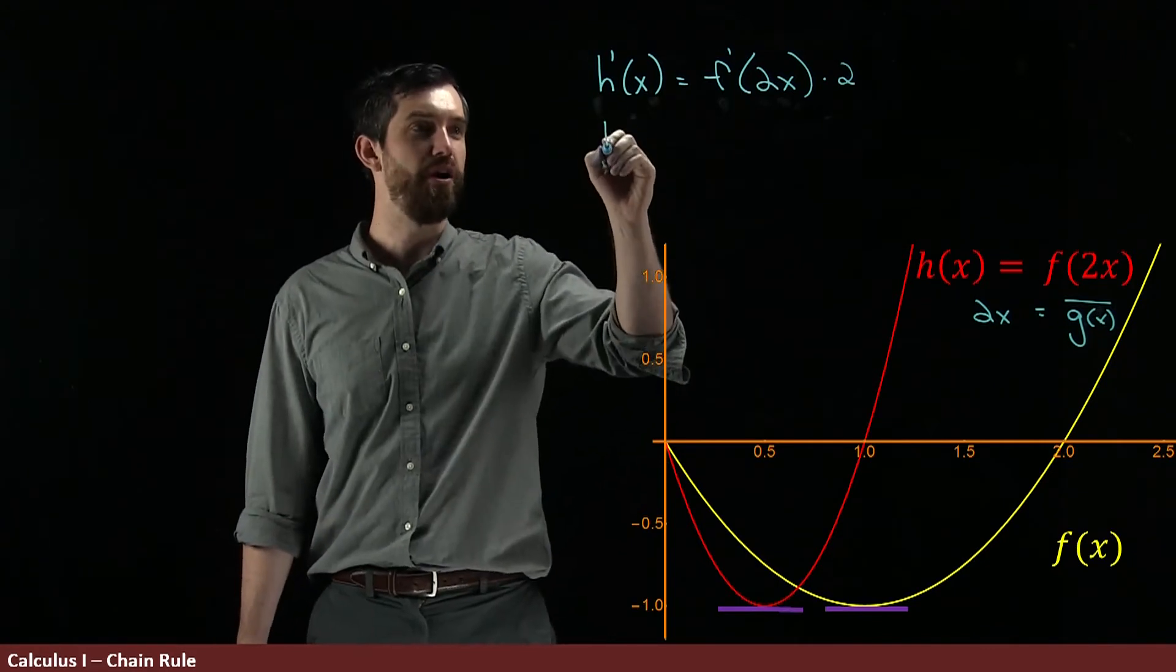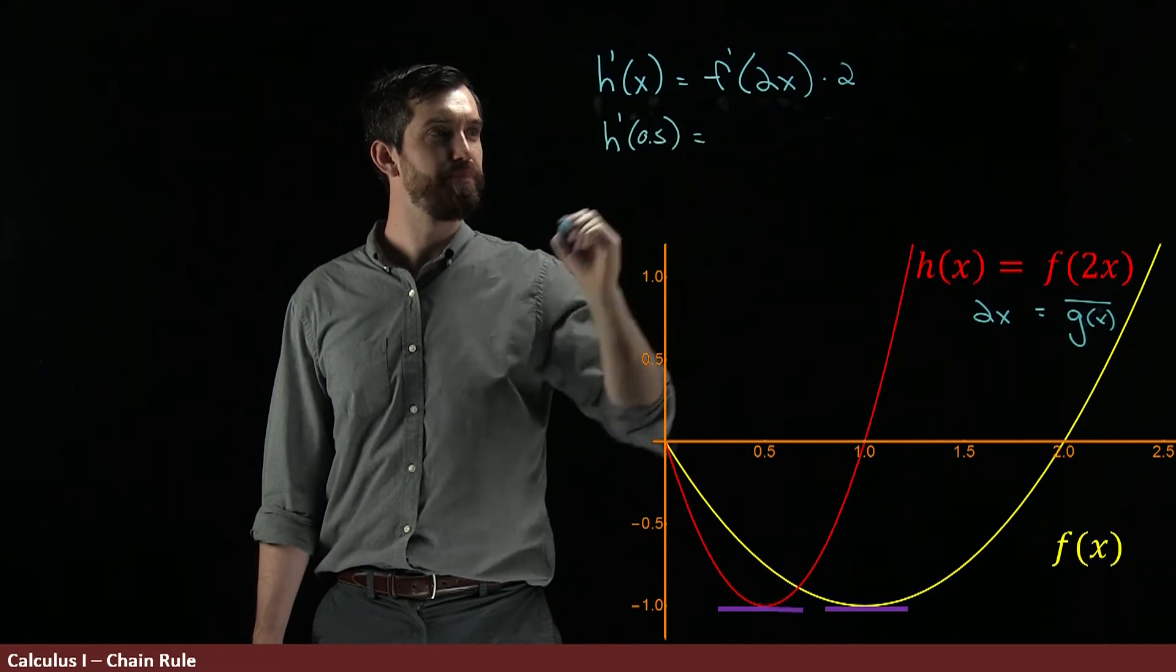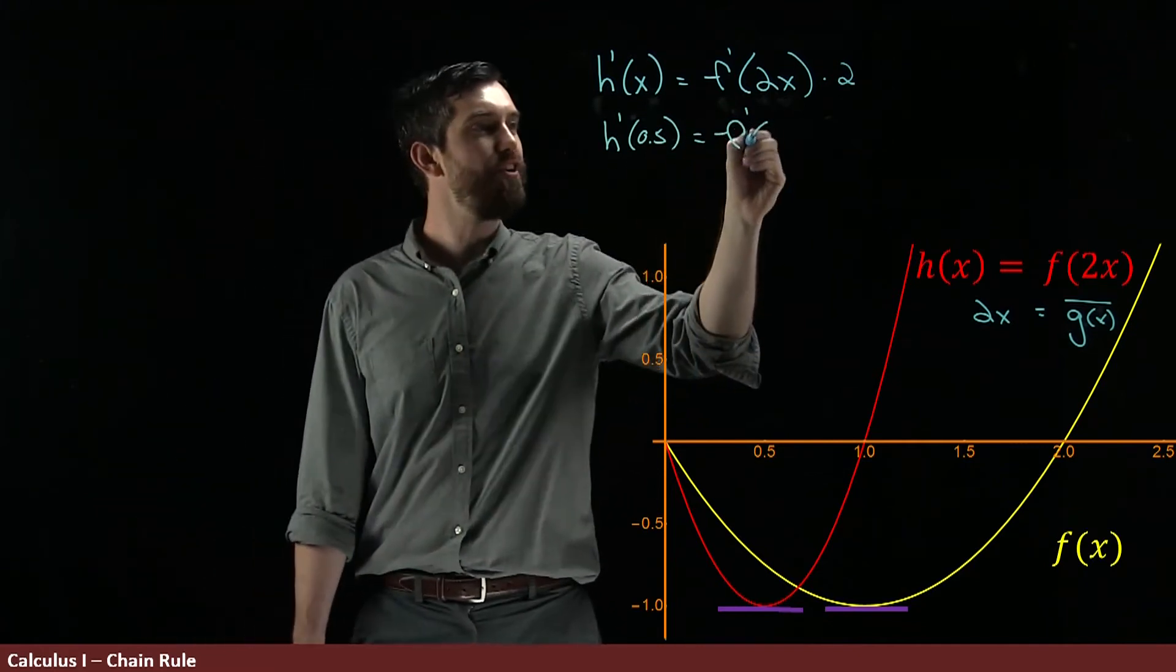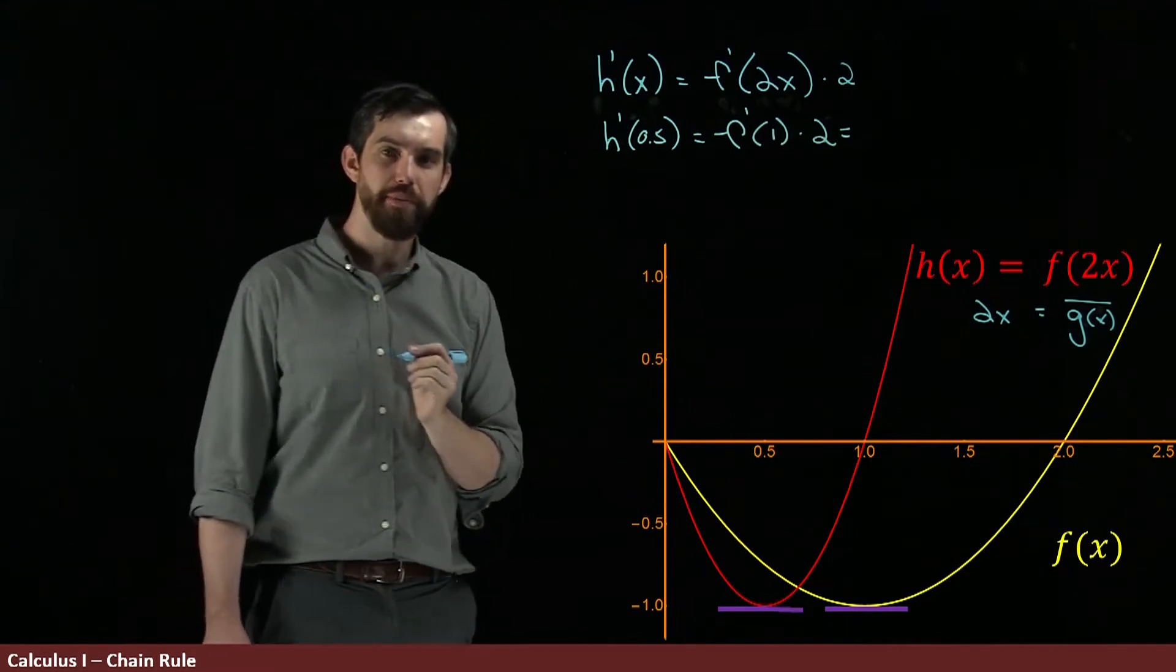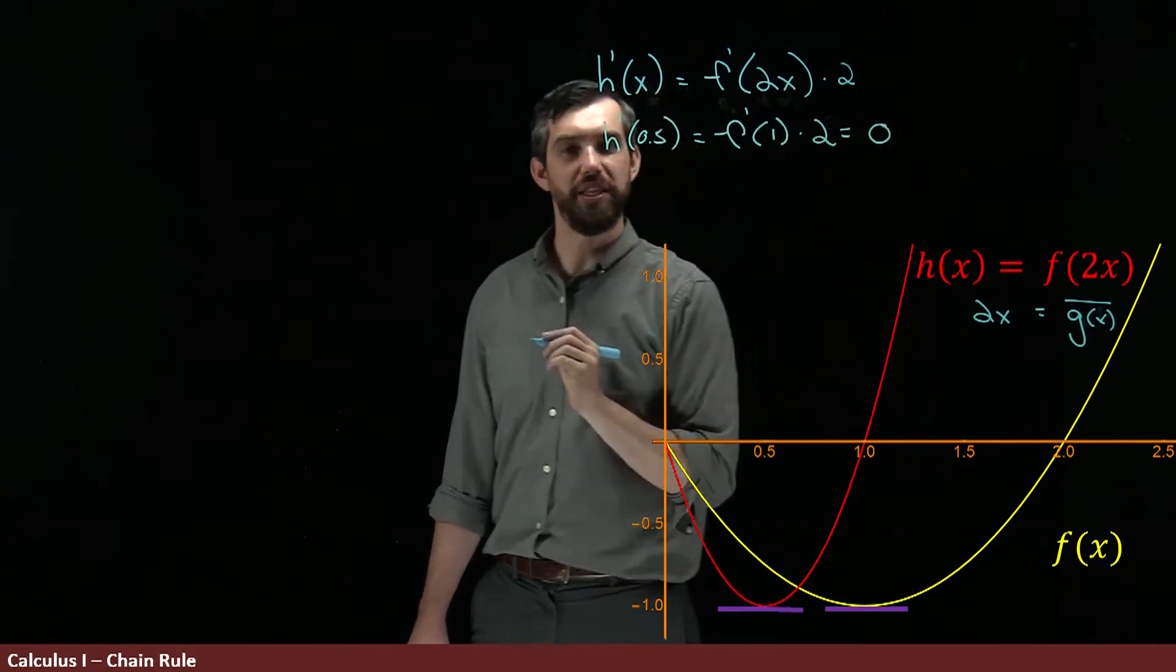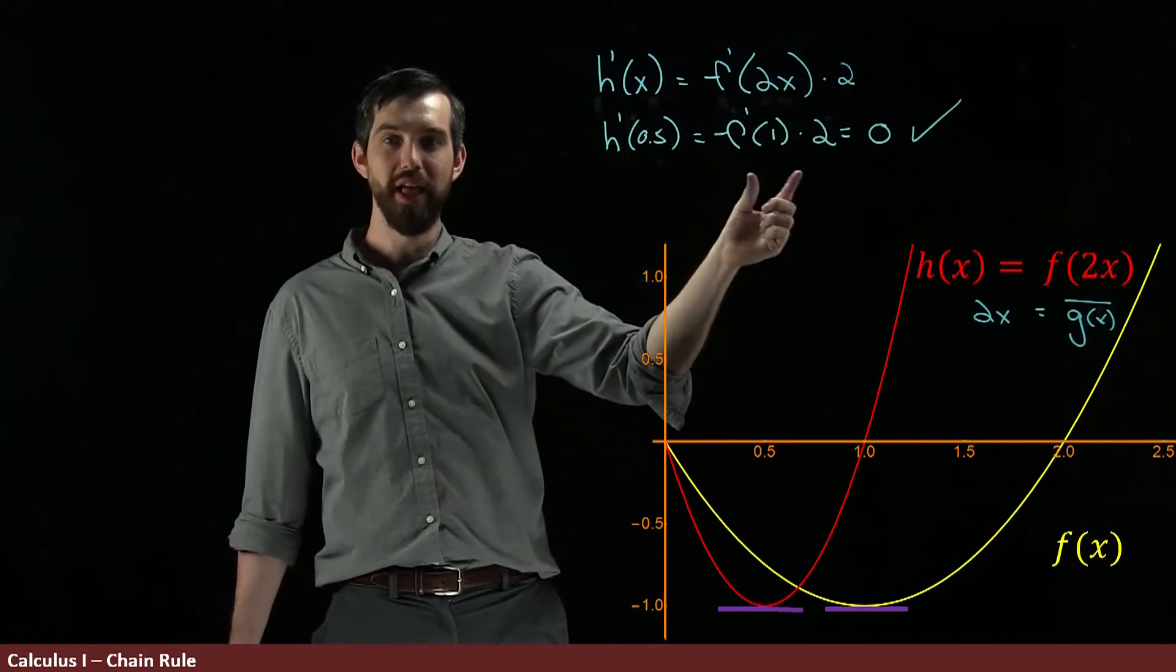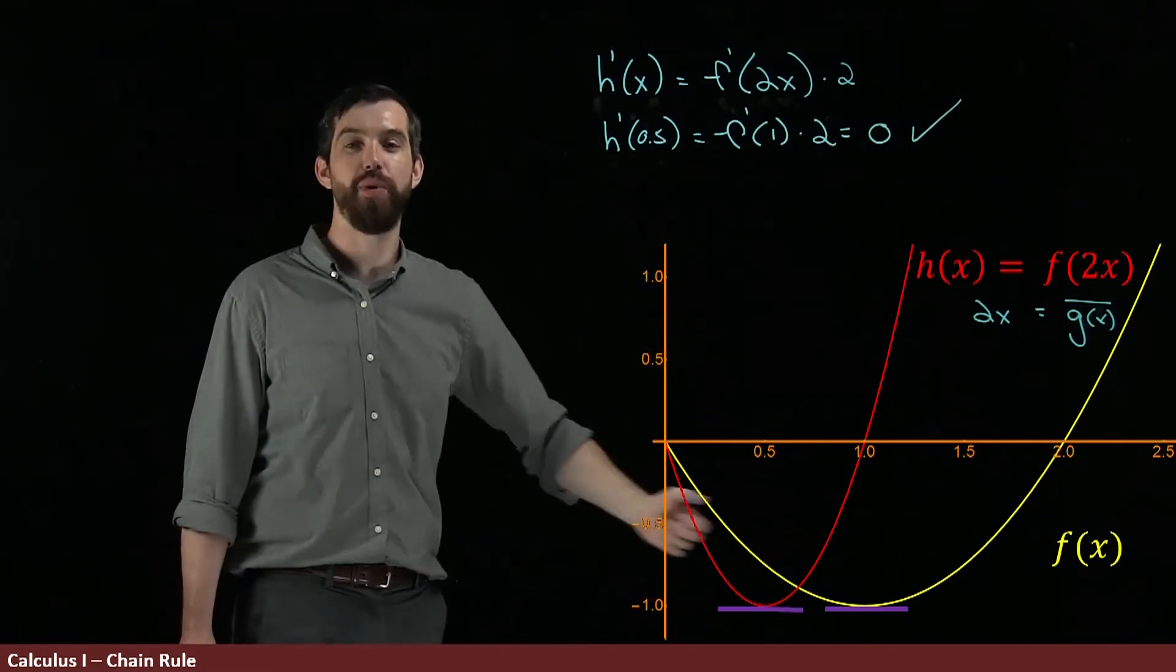I'm going to plug in some specific values here. I want to look at h prime of 0.5 here. And what that tells me is I want to look at f prime of twice a half. So in other words, f prime of 1 multiplied by the value of 2. But f prime of 1, we just said, was equal to 0, and so that's equal to 0. So my formula seems to be pretty good so far. It says the derivative at a half is, just by chain rule, the f prime of 1 times 2. So I get 0, and everything works out. I get exactly what I anticipated.